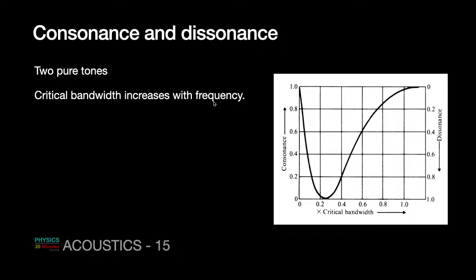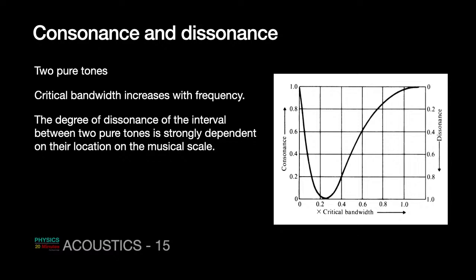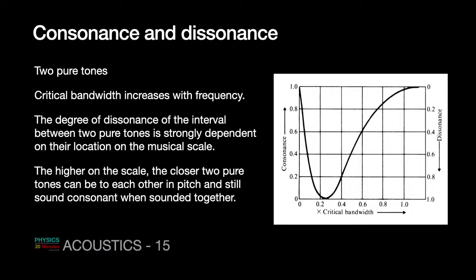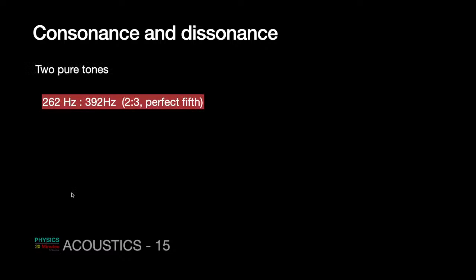This creates a very peculiar situation: the critical bandwidth is changing, so the degree of dissonance between two pure tones becomes a function of their position on the musical scale. Two pure tones situated on the lower side of the frequency scale may sound dissonant, but the same two frequencies located elsewhere on the frequency scale may sound consonant — because the critical bandwidth changes with central frequency.